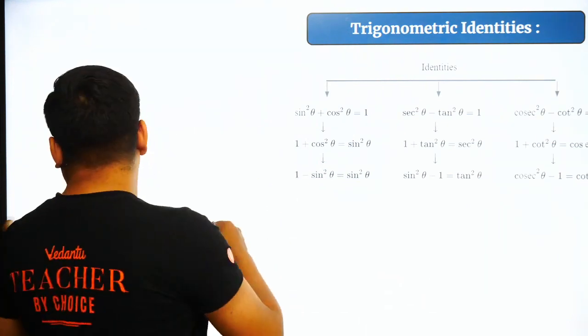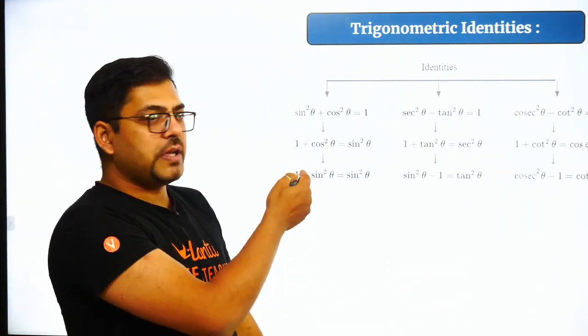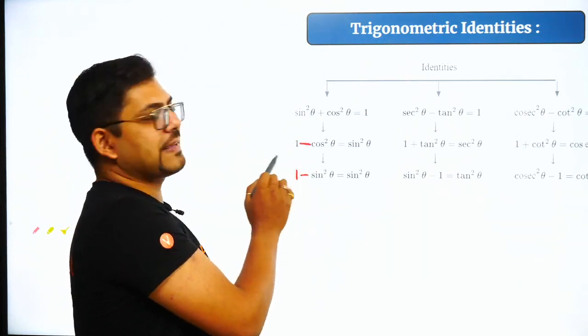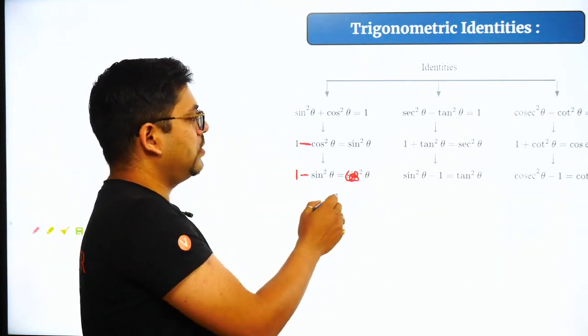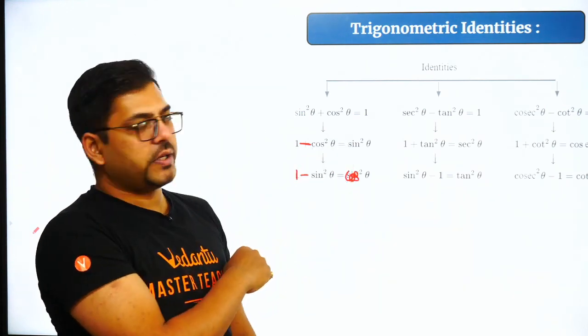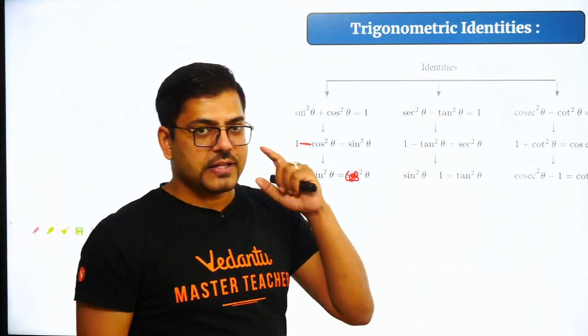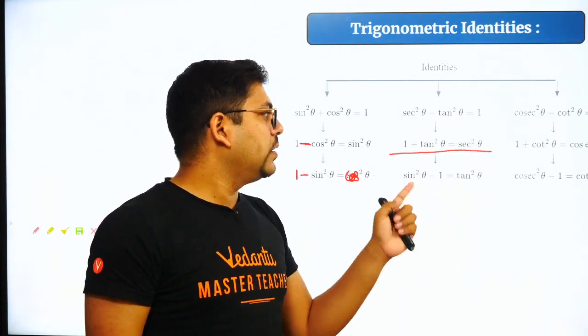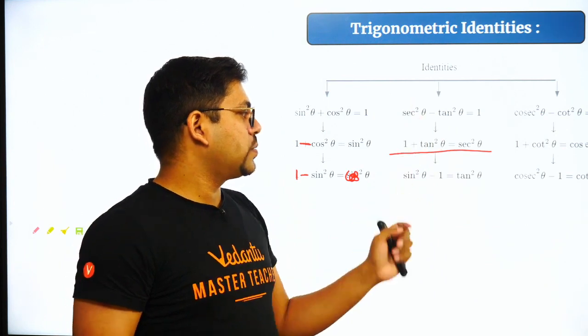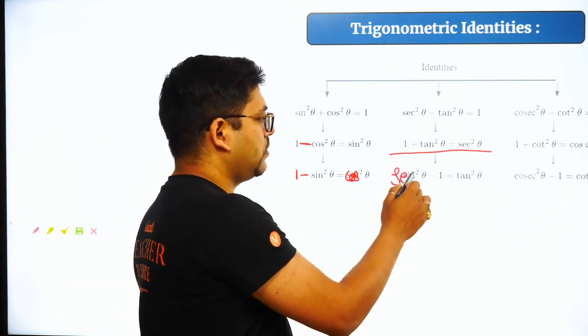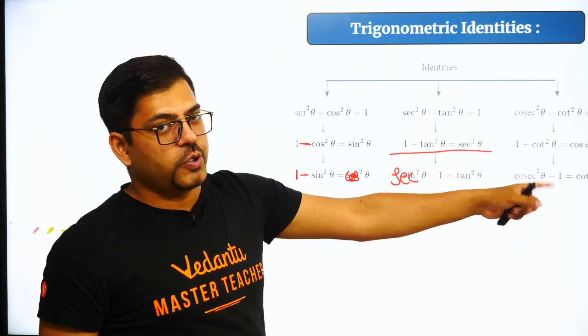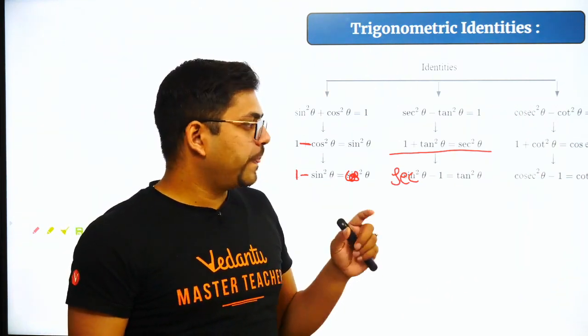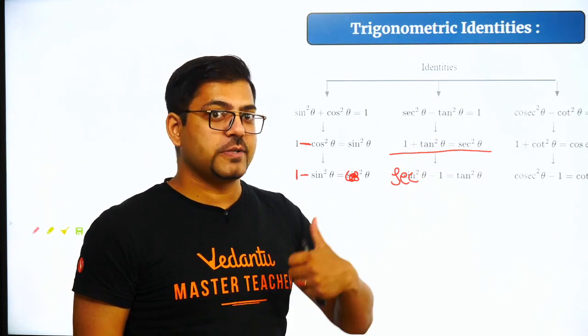These three formulas can be jumbled - you can send cos²θ to the other side. It should be 1 - sin²θ = cos²θ, 1 - cos²θ = sin²θ. Similarly, sec²θ - tan²θ = 1, so 1 + tan²θ = sec²θ, and sec²θ - 1 = tan²θ. Similarly here you can get the formula with cosec and cot. Jumbling is always possible. If you have understood this, let's move on to the next.